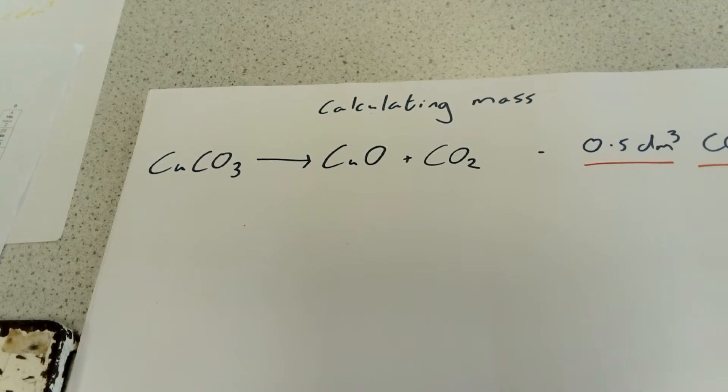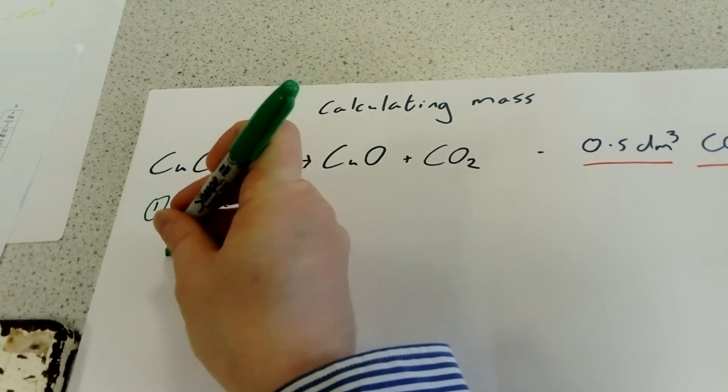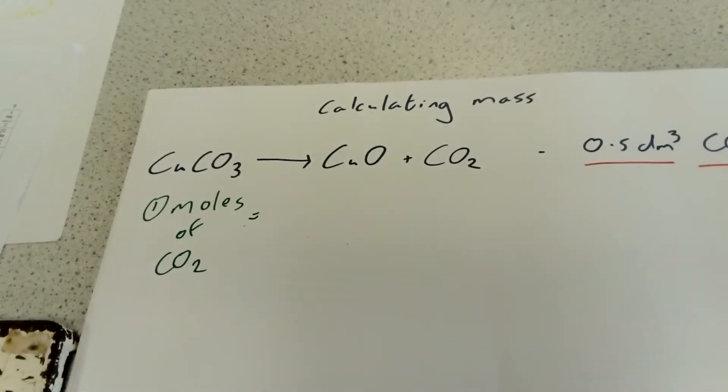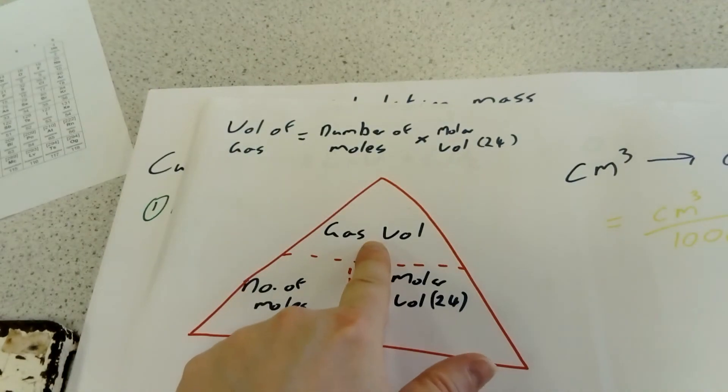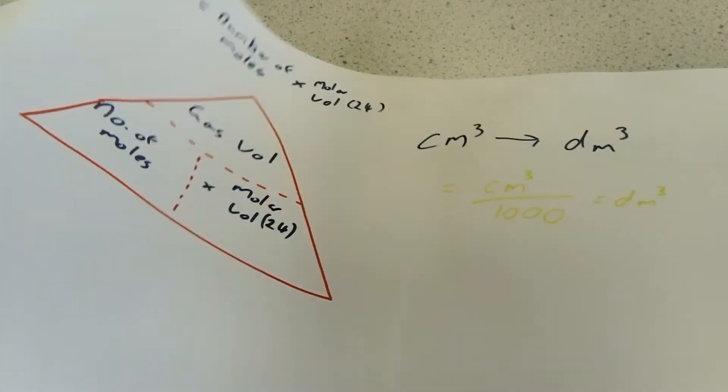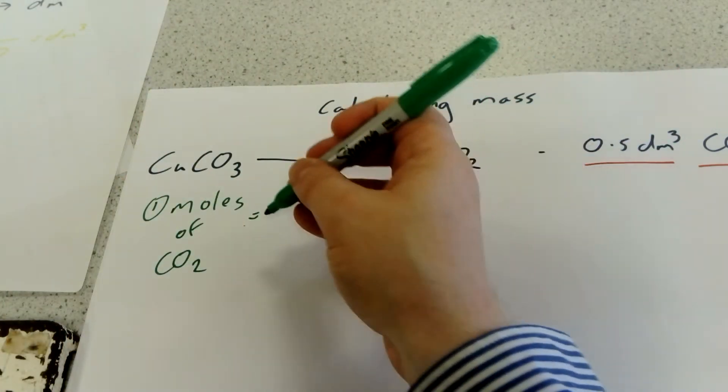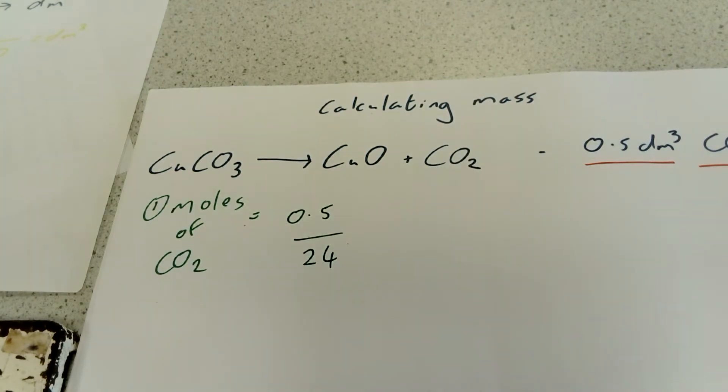The first thing we're going to do is work out how many moles of carbon dioxide that's going to be. You can do that by rearranging your equation using that triangle. If you're looking for number of moles, that's going to be your gas volume, which we know is 0.5, divided by the molar volume, which we know is always 24 decimeter cubed. So we're going to divide 0.5 by 24, which will give us our molar volume.